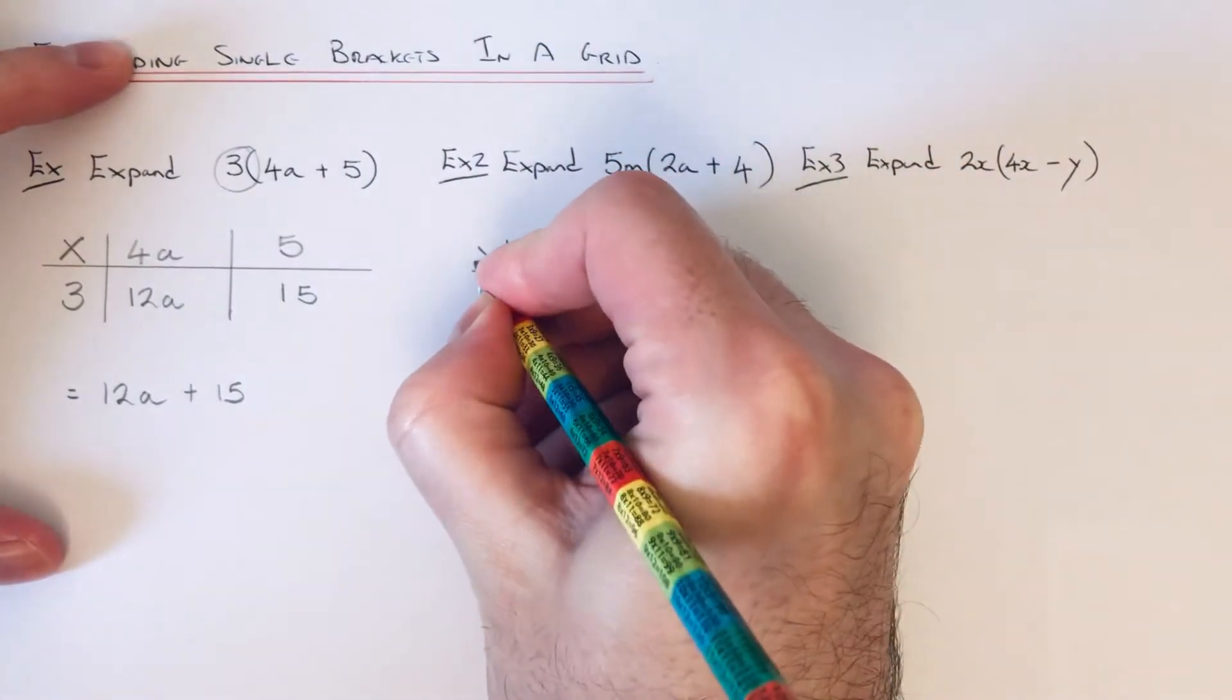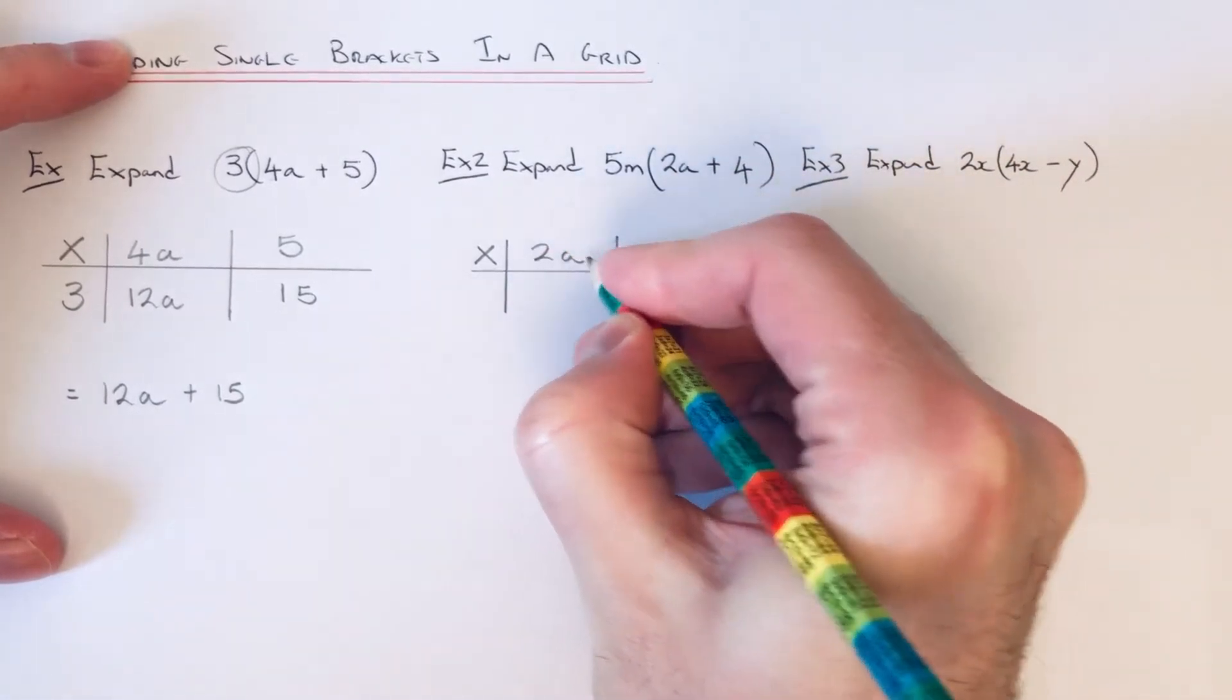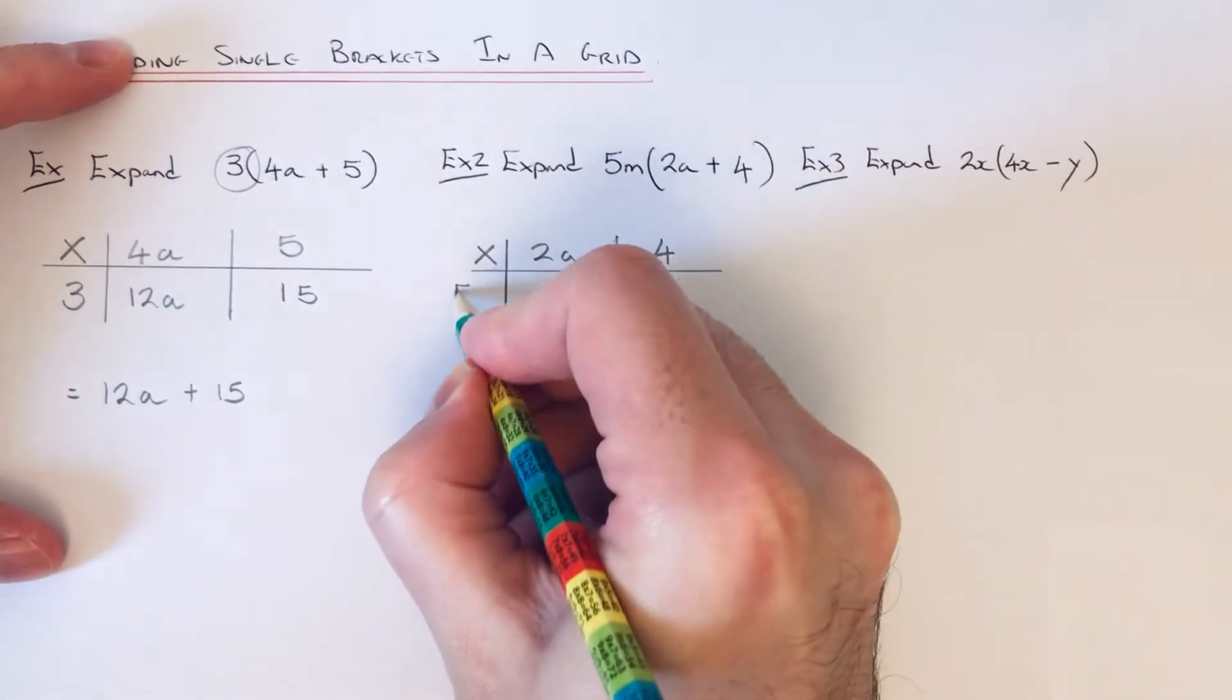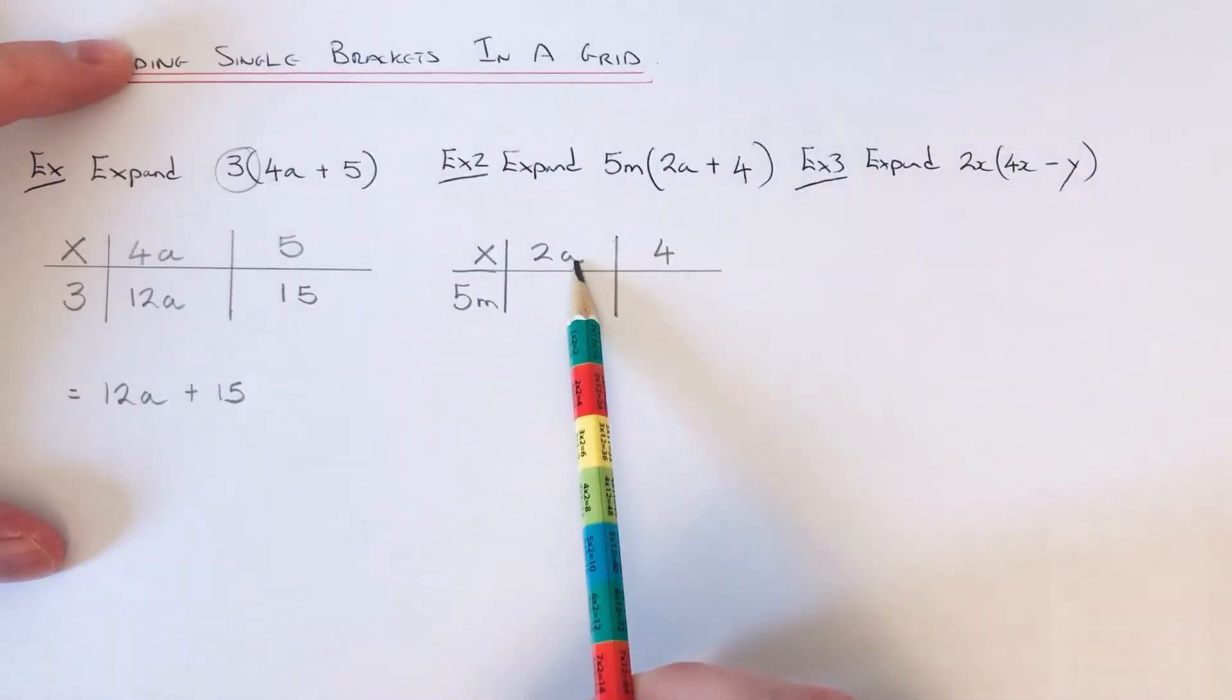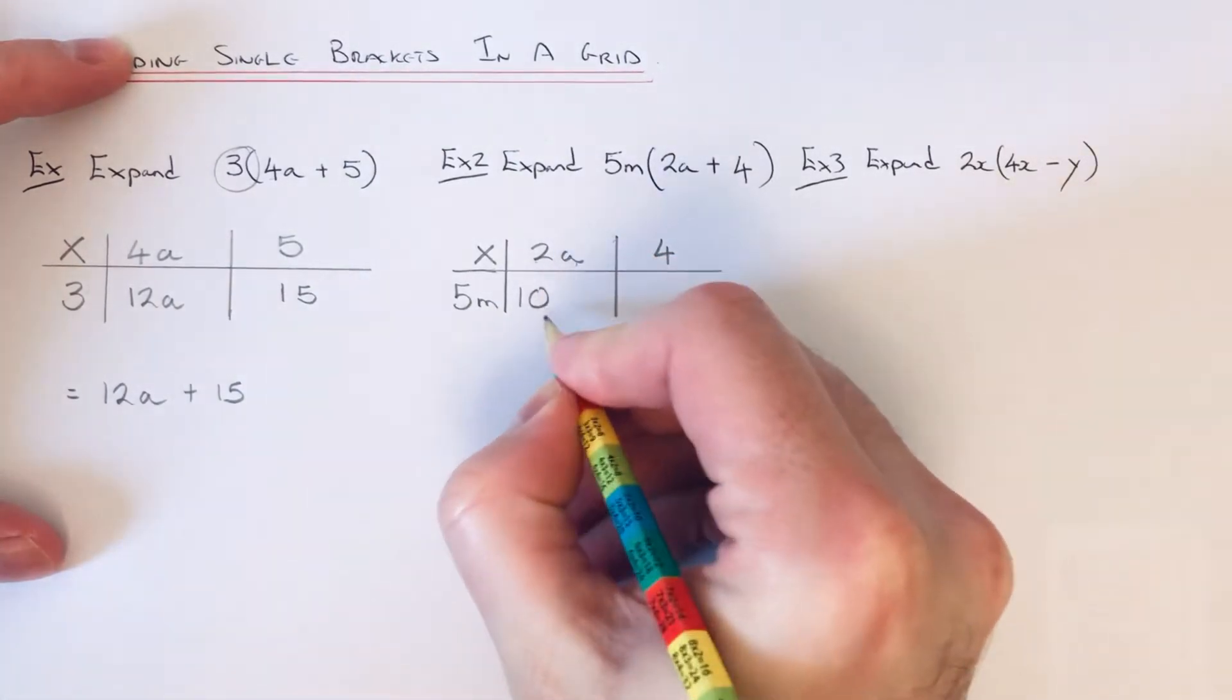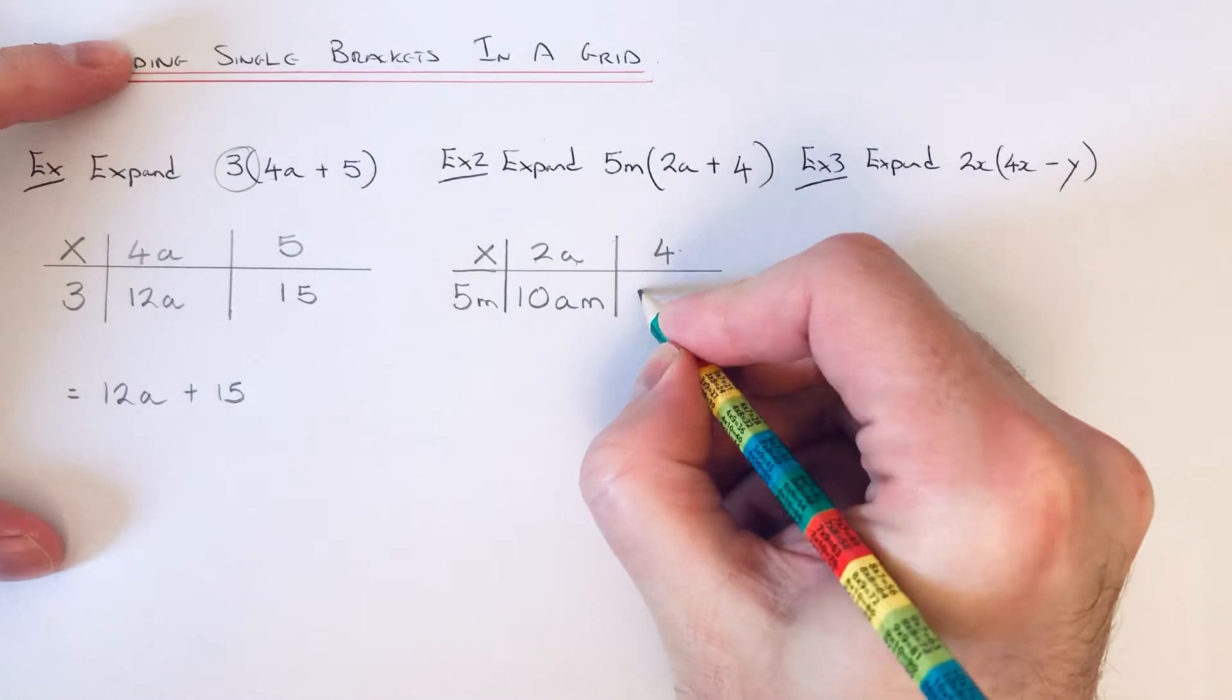Put a times sign in the corner, so split the bracket along the top: 2a and 4. This time we're multiplying by 5m. So we go 5m times 2a. 5 times 2 is 10, and then we put the letters in alphabetical order, so that would be am. Then we do 5m times 4, which is 20m.